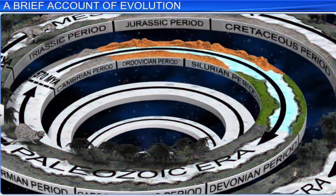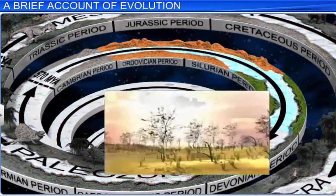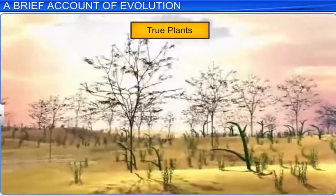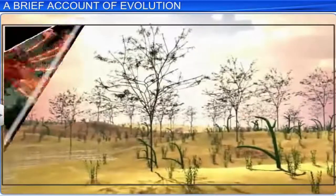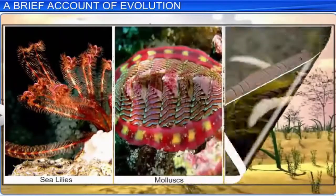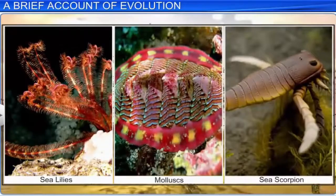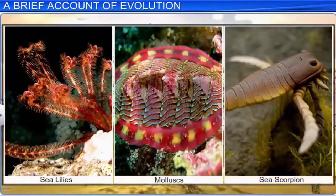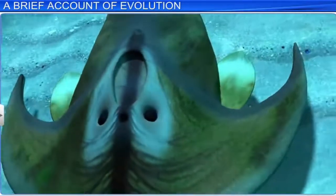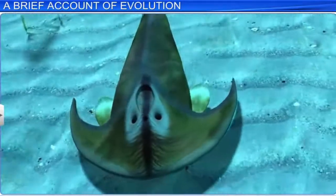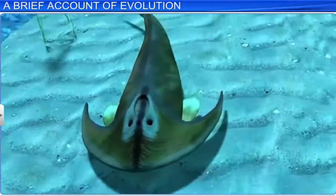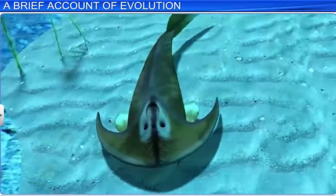In the Ordovician and Silurian periods, new plants with a stem, leaves, and roots developed. At the same time, there was an increase in the population of animals such as sea lilies, mollusks, and sea scorpions. The Ordovician period also marked the evolution of the first vertebrate, the jawless fish, around 350 million years ago.